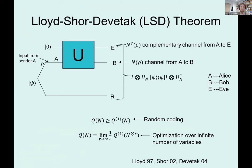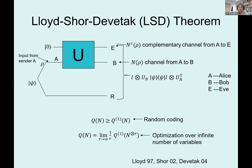The quantum capacity is given by the regularization of the coherent information: the coherent information generated over many uses of the channel divided by the number of uses, taking the limit as uses go to infinity. This gives a characterization of the quantum capacity, but it leaves you with an infinite-dimensional optimization — not always extremely useful in practice.